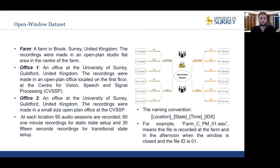Office two recordings were made in a small-sized open-plan office. This office accommodates eight researchers and the recordings are considered to have a medium level of background noise. At each location, 19 audio sessions are recorded: 60 one-minute recordings for static state setup and 30 15-second recordings for transitional state setup.